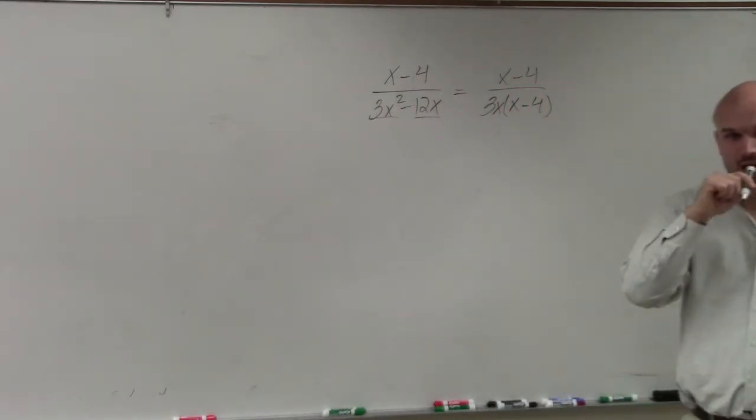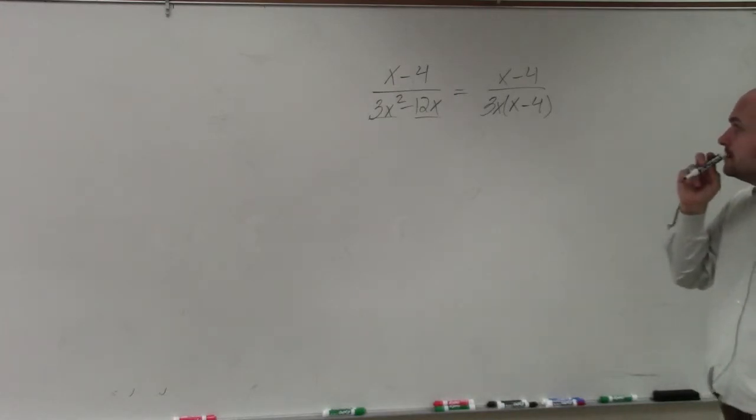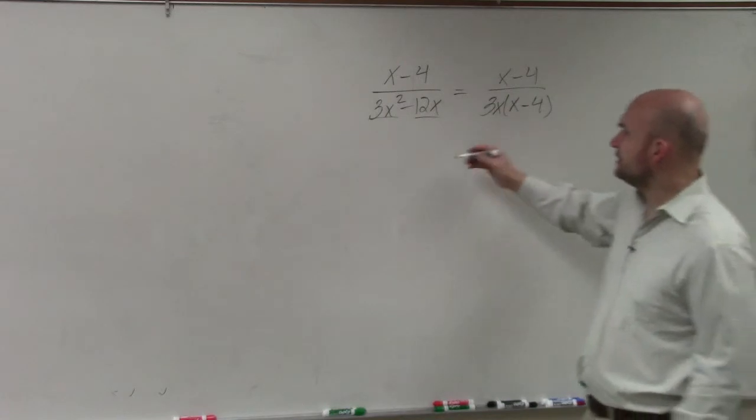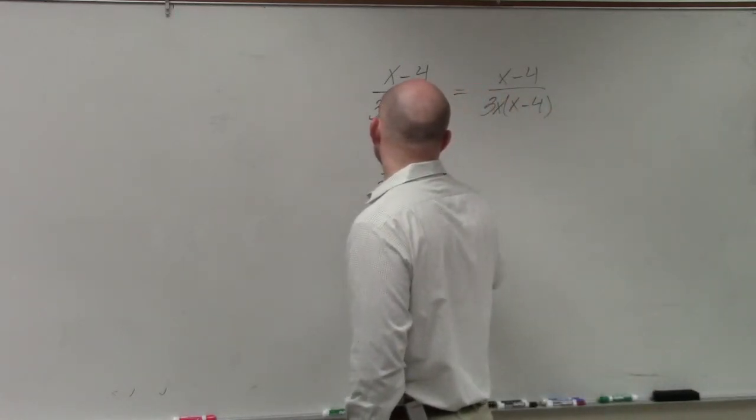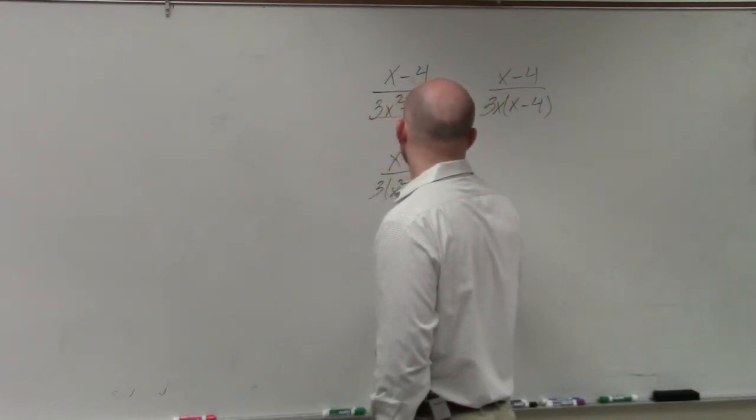Yes. Why wouldn't you be able to just take out the 3 first? Or would that affect anything? You could take out a 3. But if you just take out a 3, then you're just left with x minus 4 divided by 3 times x squared minus 4x.